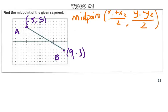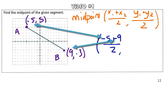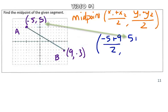So, what we can do is substitute these values into our midpoint formula to solve for the midpoint. So, we've got negative 5 plus 9 divided by 2, and 5 plus negative 3 divided by 2.